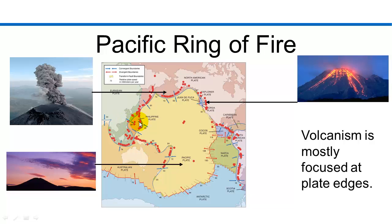The red dots show the location of active volcanoes. Notice how the majority of the volcanoes are focused along the plate boundaries. For this reason, this area is known as the Pacific Ring of Fire.